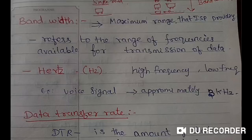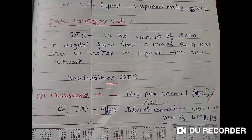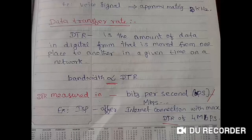Data transfer rate (DTR) refers to the amount of digital data moved from one place to another in a given time on a network. It measures how much digital data a system can transfer.